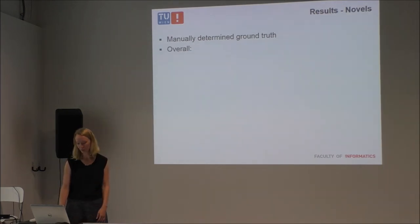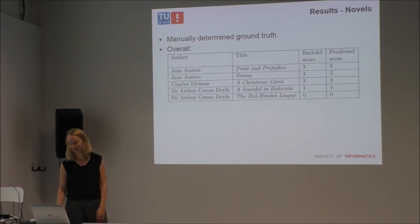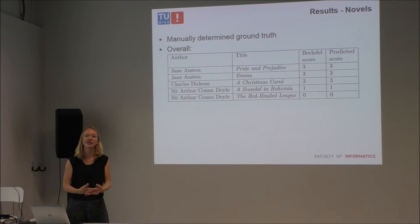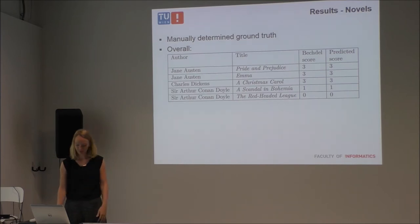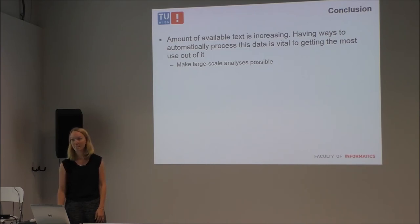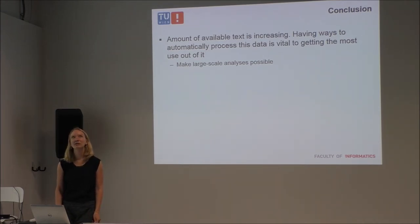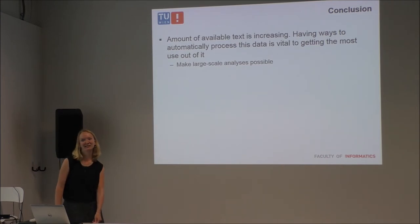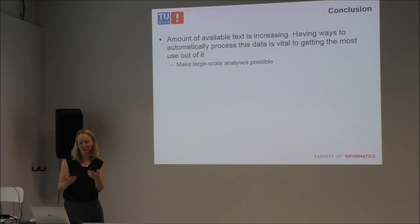For novels, I manually determined the ground truth and was able to correctly predict the Bechdel score for all five novels. A large-scale analysis with many texts across certain time periods would be very interesting. It would also be interesting to look at Agatha Christie novels — though I would need to improve my character detection algorithms first. That's also the weakness of the Bechdel test: there can be a strong female character, like Princess Leia, who still doesn't pass it.